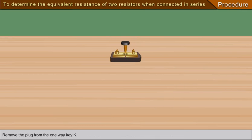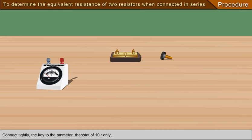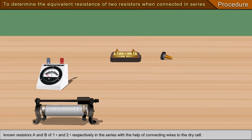Remove the plug from the one-way key K. Connect tightly the key to the ammeter, rheostat of 10 ohm, known resistors A and B of 1 ohm and 2 ohm respectively, in series with the help of connecting wires to the dry cell.